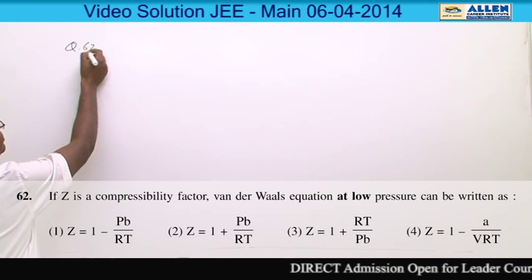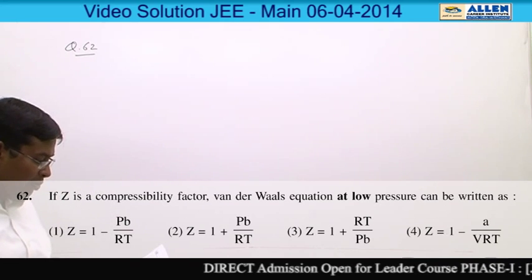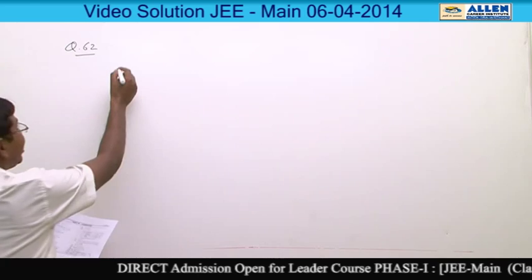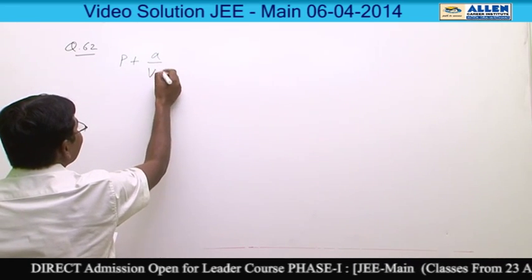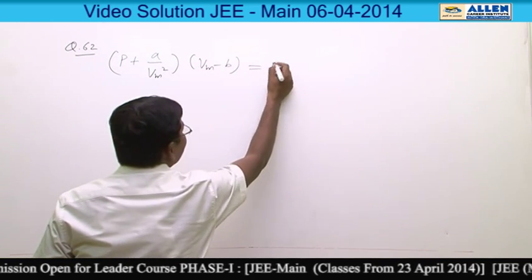Question number 62. Van der Waals equation of state at low pressure compressibility factor. Van der Waals equation of state is P plus A by Vm whole square into Vm minus B is equal to RT.